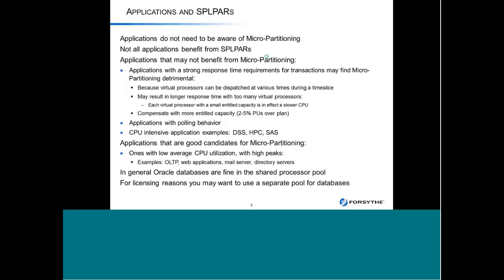I suggest that for BI workloads you try it both ways — see if it runs better in the shared processor pool. And at the bottom I have a note that for licensing reasons, if you have databases that license based on VPs or the size of the pool, you're going to want to use a separate processor pool for those databases.